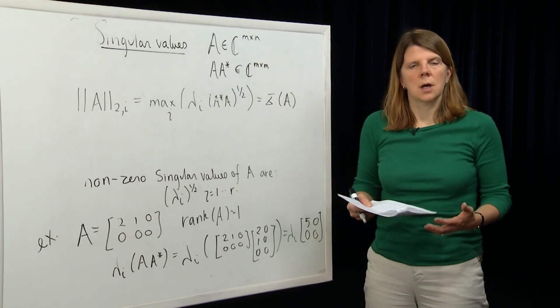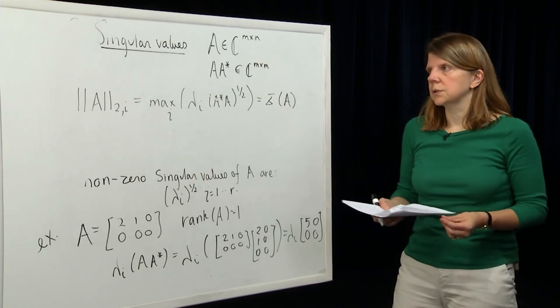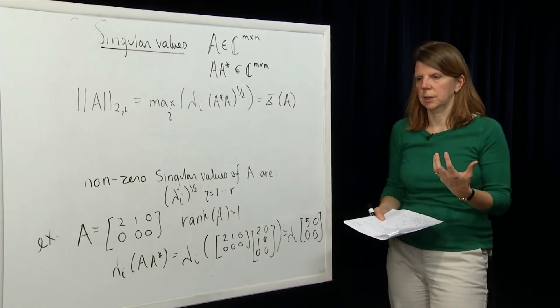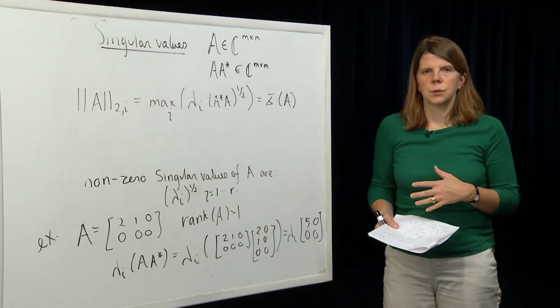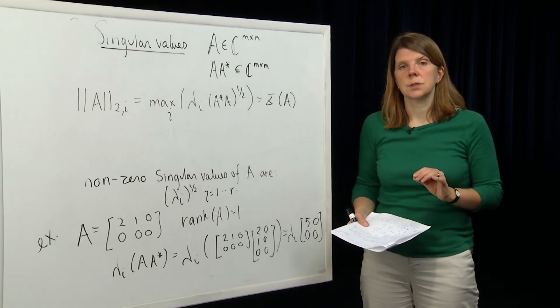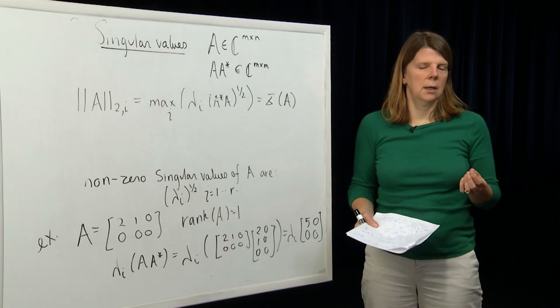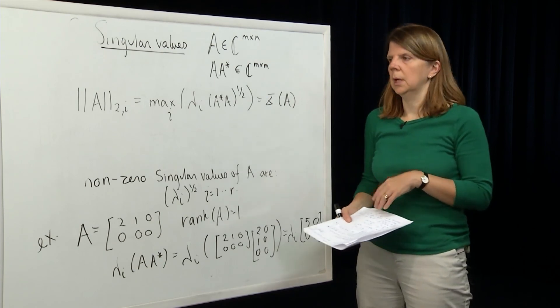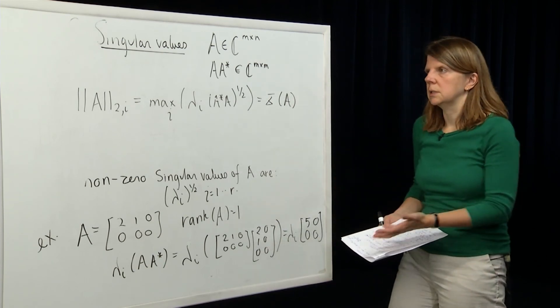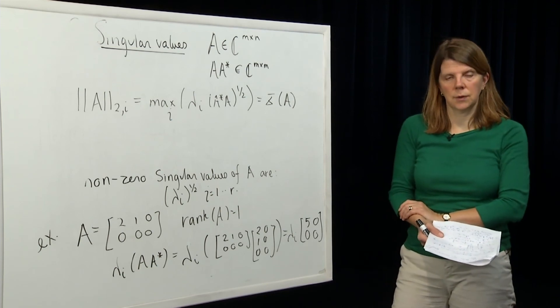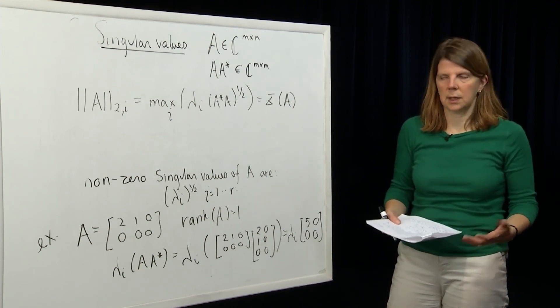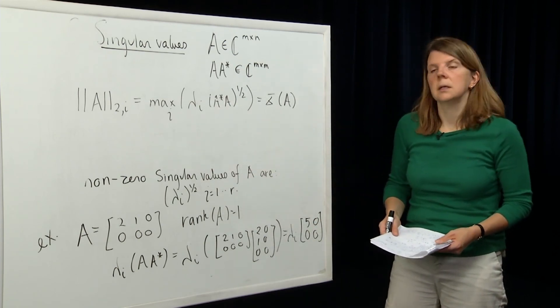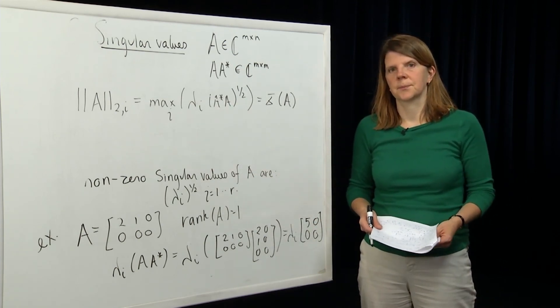So in this module, we've used our knowledge of adjoint maps, inner products, to think about Hermitian matrices. So what it means to be self-adjoint when you're thinking about the matrix representation of a linear map. We've talked about unitary matrices and we've also talked about singular values. We've defined what singular values are and we've related them to, at least in the 2 norm case, the induced 2 norm of a matrix. Thank you.